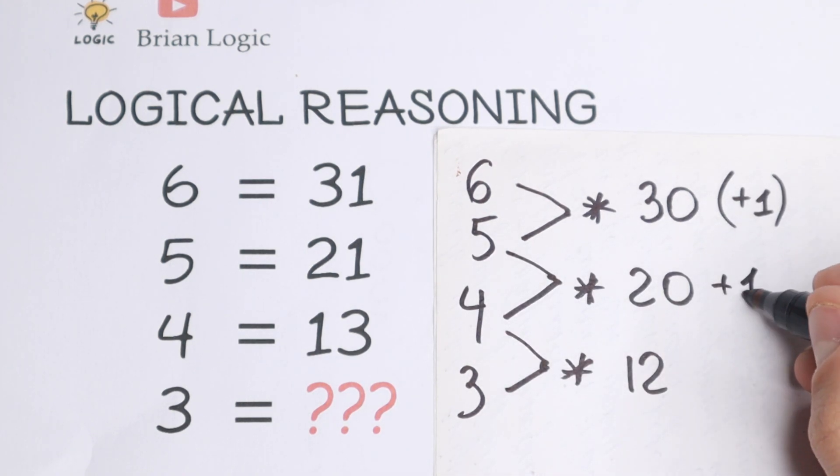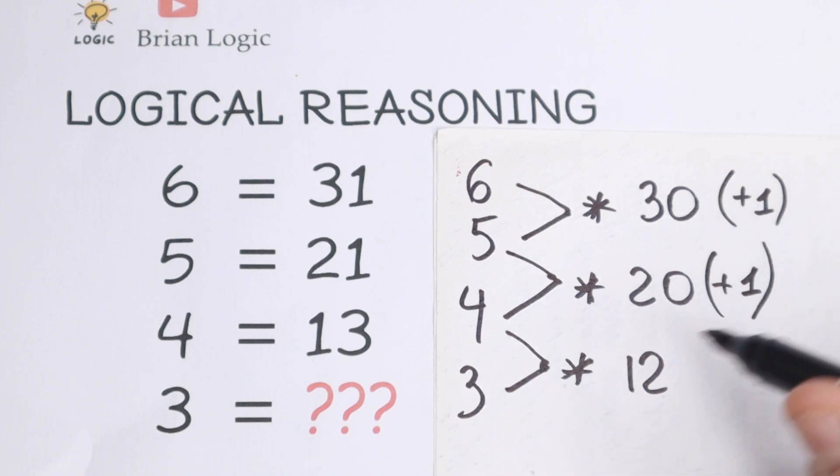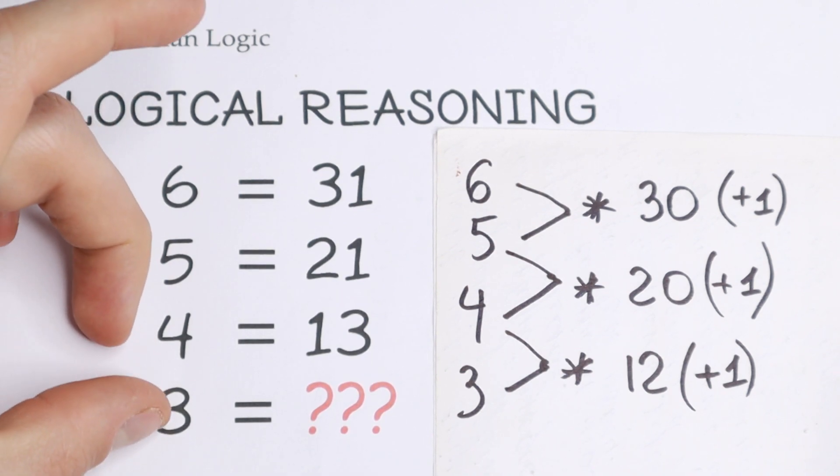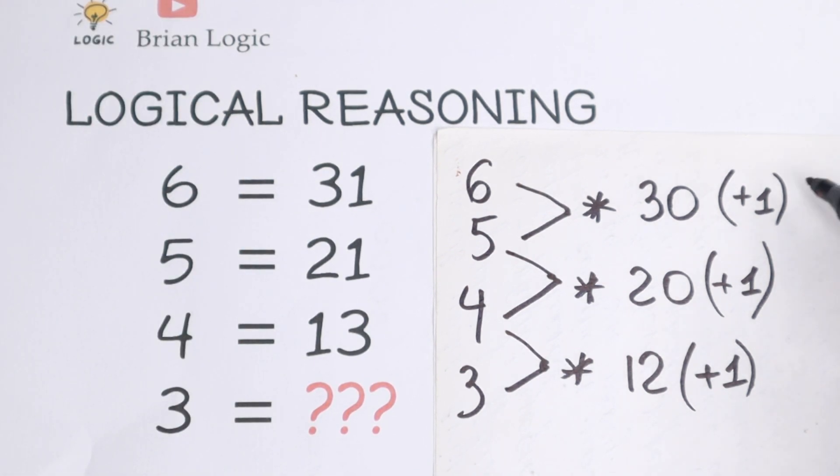So right here add 1, we'll have 31. Right here add 1, we'll have 21. And right here add 1, we'll have 13. As you can see, there's a pattern between all of these numbers. We multiply these pairs, these pairs, and these pairs, and we need to add 1: 31, 21, and 13.